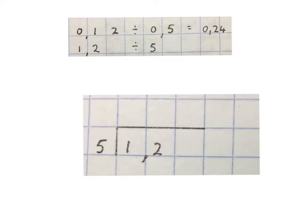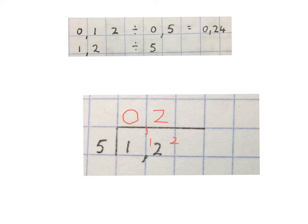You may also use short division immediately: take the comma and put it in the answer. Then you say 5 goes into 1: 0 times, carry 1. Then 5 goes into 12: 2 times, with 2 remaining. I'm allowed to put in zeros as many as I need. Next, 5 goes into 20: 4 times. With no more remainder, 0.24 is the final answer.